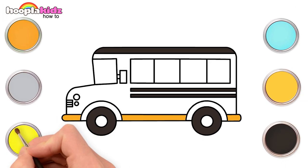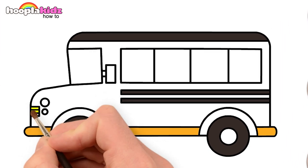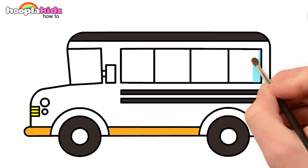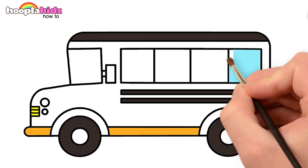Wasn't that easy? Now use lemon yellow to fill the lines in the front side of the bus. Let's use sky blue to fill color in the windows.